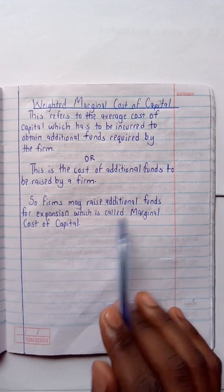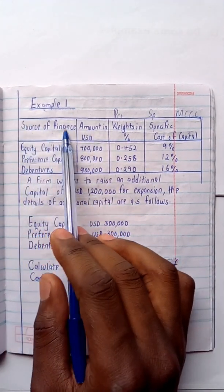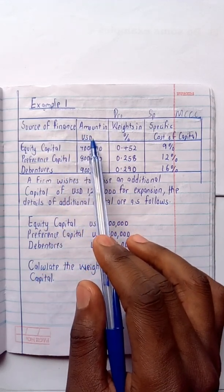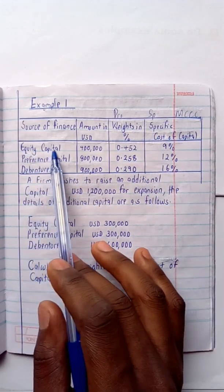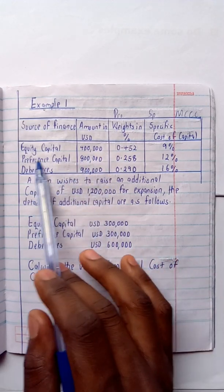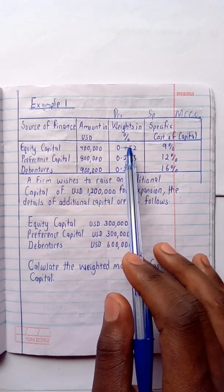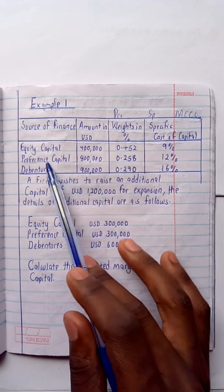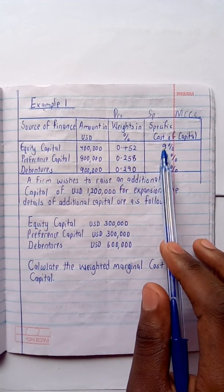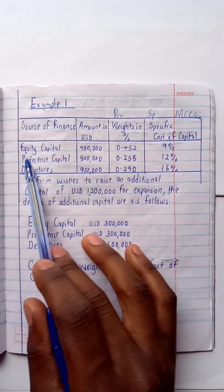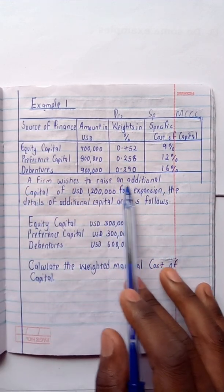I have my example here. The table shows: source of finance, amount in US dollars, weights in percentage, and the specific cost of capital. Equity capital is 400,000; preference shares are 800,000; and debentures are 900,000. The weights are: equity 0.452, preference shares 0.258, debentures 0.290. The specific costs are: equity 9%, preference shares 12%, debentures 16%.